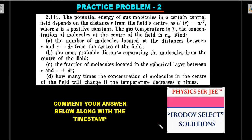Practice problem two is taken from Irodov Select Solutions — one student's guess was very close to this. It's a very interesting question where the potential energy of gas molecules varies with radial distance, and based on that you must find the concentration of molecules, which unlike the usual uniform case is non-uniform here. Try all four parts carefully — this is definitely at JEE Advanced level.